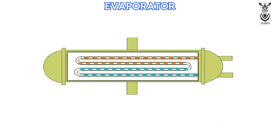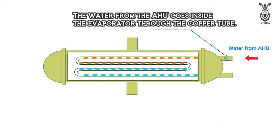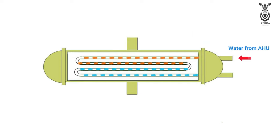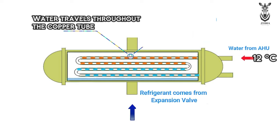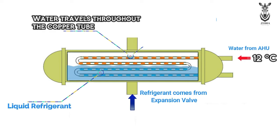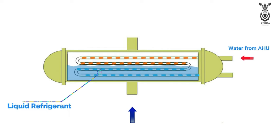Next, the refrigerant will enter into the evaporator. The evaporator is also similar to the condenser. In the condenser, the water from the cooling tower enters through the coil, but in the evaporator, the water from the AHU enters through the coil. The water from the AHU will enter into the evaporator at 12 degrees Celsius and will travel throughout the coil. The refrigerant that comes in cold from the expansion valve surrounds the coil inside the evaporator.